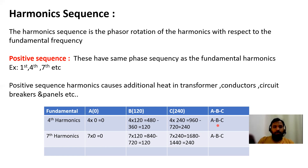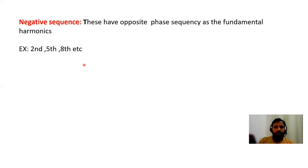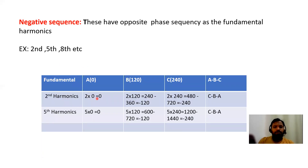Negative sequence harmonics are opposite to the fundamental phase sequence. Examples are the 2nd, 5th, and 8th harmonics. For the 2nd harmonic: 2×0=0, 2×120=240, and 240−360=−120. Then 2×240=480, and 480−720=−240. So the phase rotation is 0, −120, −240 — opposite to our fundamental. Therefore these are called negative sequence harmonics.